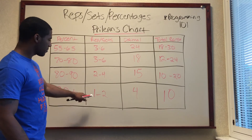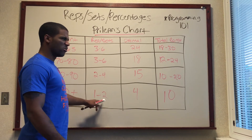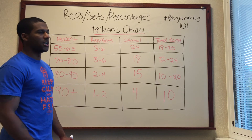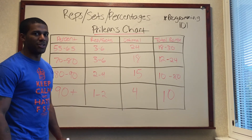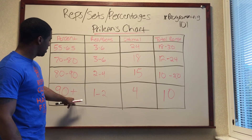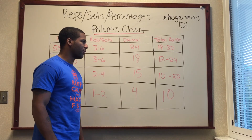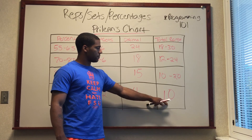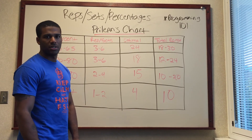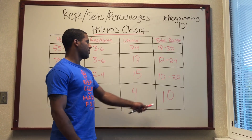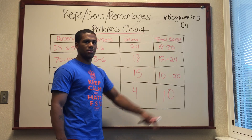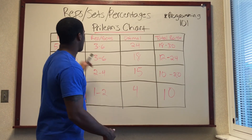Same thing with 90 plus. If you're doing 95%, there's no reason to do a 5x5 — you're not going to be able to do it, it just doesn't make sense. If you can do 95% for 5x5, you probably need to reprogram your workouts. At 90 plus you do two sets of two to get your four reps. The total range goes up to 10 — closer to competition you can do heavy singles, but the closer you get to the higher end of those numbers, you're putting too much stress on the muscle for that percentage and rep range.